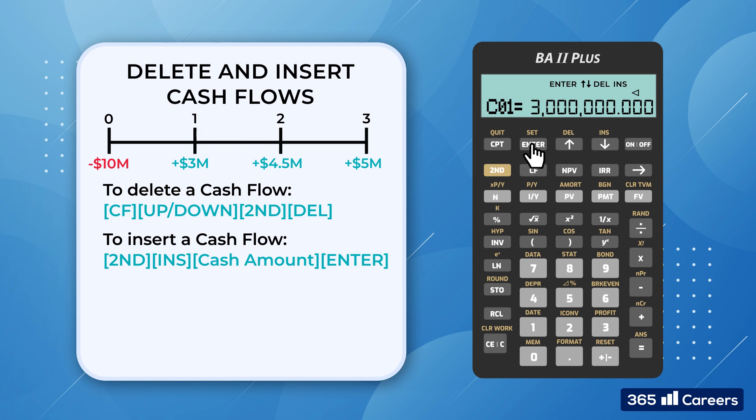When you insert a cash flow, the calculator increases the number of the following cash flows automatically up to the maximum number of 32, so $4.5 million is now CO2.